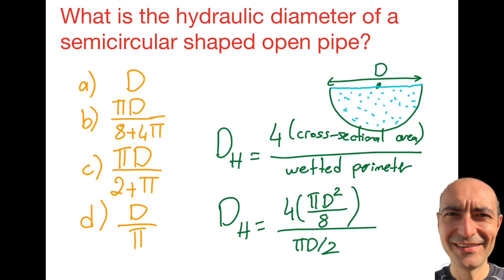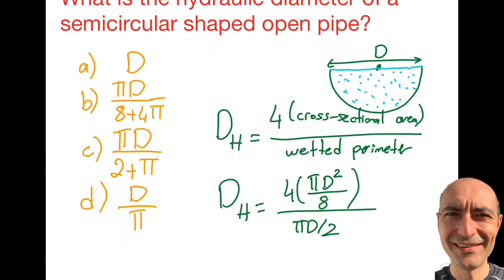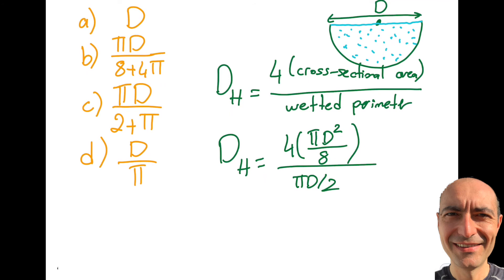Now if this was a closed channel, read the question carefully. If this was closed over here and the top is also occupied by pipe material, then you'd add—you're going to get πD/2 plus D. That would be the wetted perimeter if this was closed. But the question is testing me on the open one, because you'll see why—it's kind of interesting in a minute.